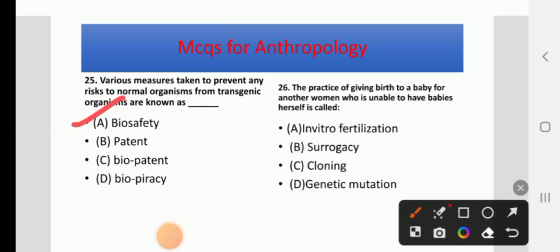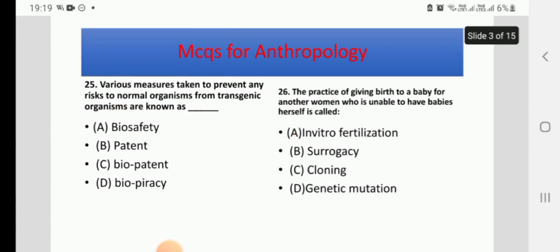The practice of giving birth to a baby for another woman who is unable to have babies herself is called — In Vitro Fertilization, Surrogacy, Cloning, or Genetic Mutation. The right answer is B: Surrogacy.